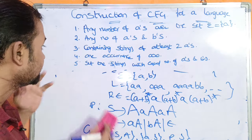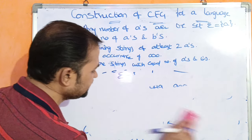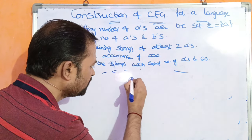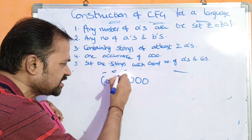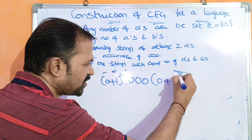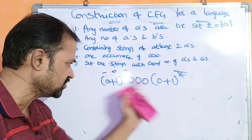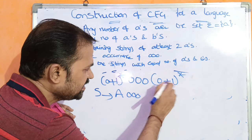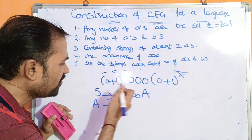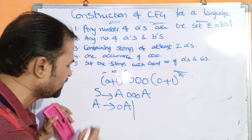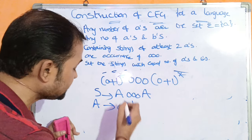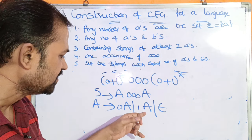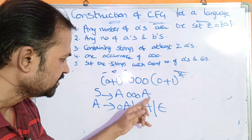Now let us see the next example: one occurrence of triple zero (000). Before this triple zero we can have any number of zeros and ones, and after this triple zero we can have any number of zeros and ones. So S implies A 000 A, where A implies 0A or 1A or epsilon — representing any number of 0s and 1s.